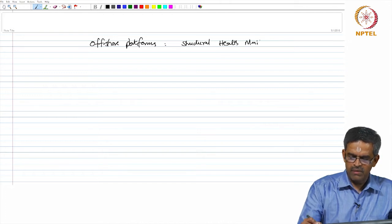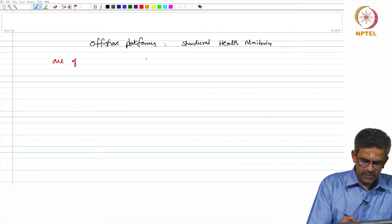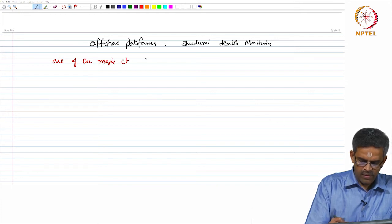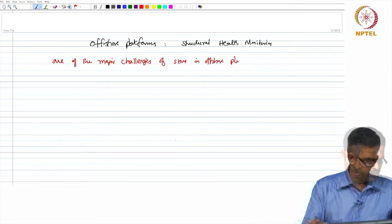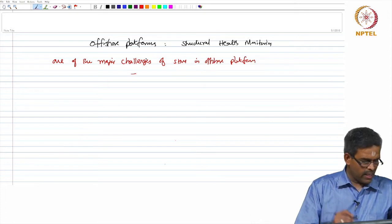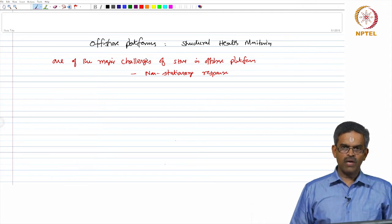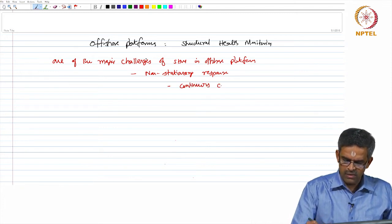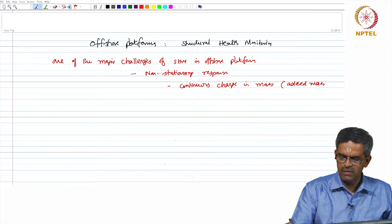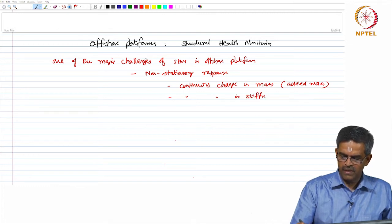So, in this perspective, let us see what are their importance. If you look at one of the major challenges of SHM design in offshore platform, it essentially arises from the non-stationary process which is their response. The response of offshore platforms essentially are non-stationary in nature. It means there is a continuous change in mass what we technically call as added mass and continuous change in stiffness characteristics. I will explain that very quickly.